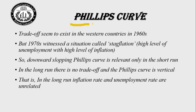The Phillips curve critics say the trade-off seems to exist in western countries in the 1960s. But in the 1970s, there was a situation called stagflation — a high level of unemployment with a high level of inflation. So according to the 1970s data, the Phillips curve is not showing the exact relationship. Therefore, the downward sloping Phillips curve is relevant only in the short run. In the long run, there is no trade-off and the Phillips curve is vertical.